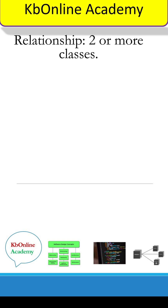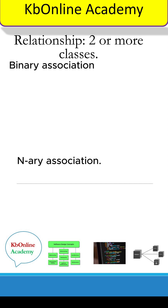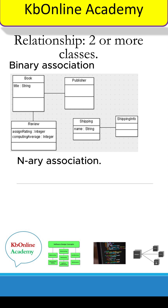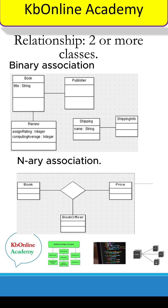Relationship in class diagram represents the interaction between two or more classes. Relationship between two classes is called binary association, and if the relationship is between more than two classes, it is called binary association.